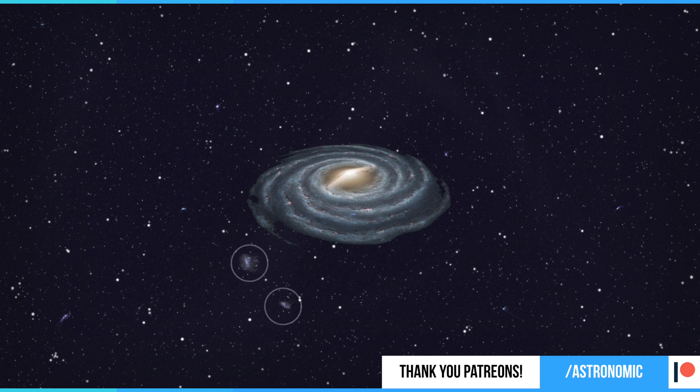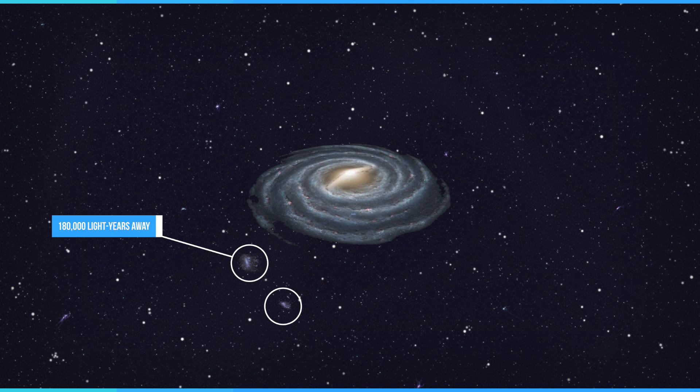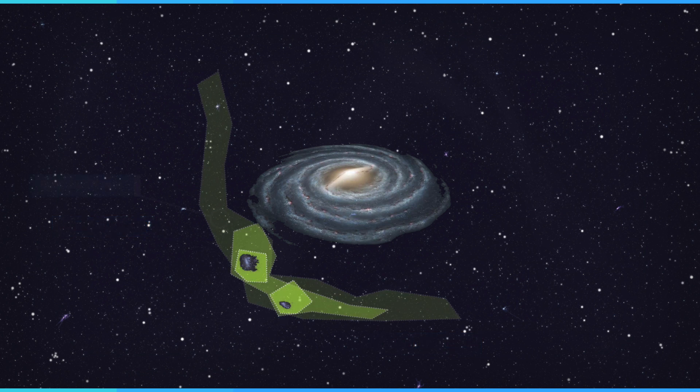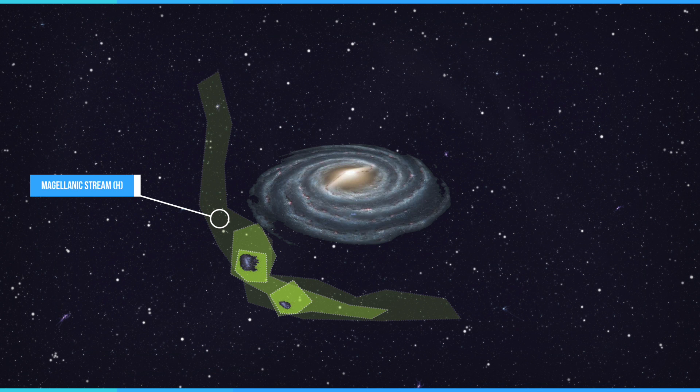The magellanic clouds are among the Milky Way's nearest neighbours. The large magellanic cloud lies about 180,000 light years away and the small magellanic cloud is around 200,000. A stream of hydrogen called the magellanic stream is drawn out by past interactions with the Milky Way galaxy, and this is what connects the galaxy to the clouds.